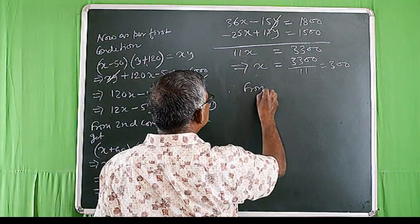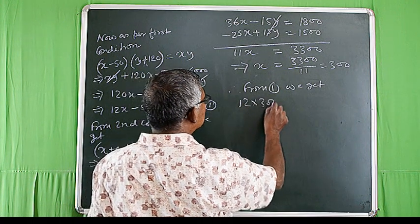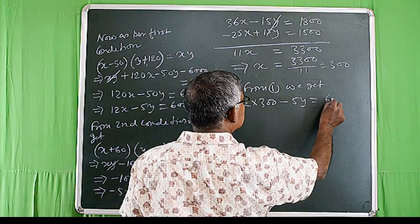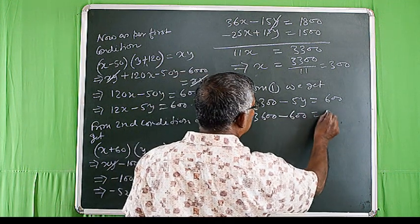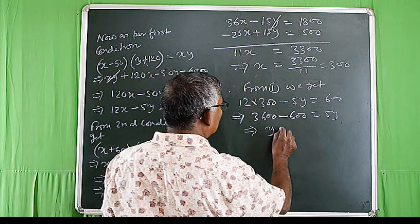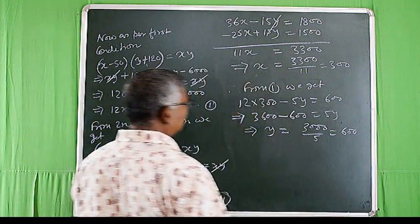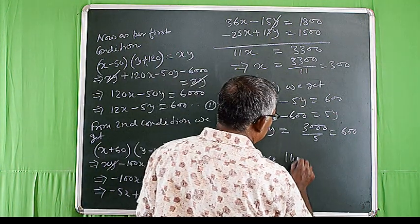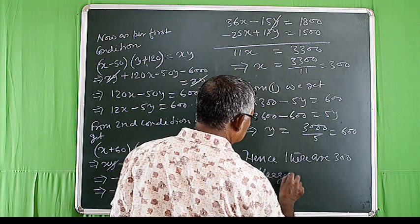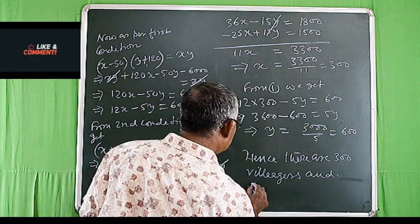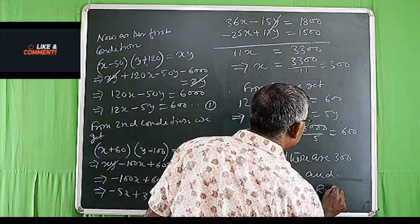Now let us substitute the value of x in equation number 1. From equation 1: 12 × 300 - 5y = 600, which implies 3600 - 600 = 5y, so y = 3000 / 5 = 600. Hence there are 300 villagers and everyone gets Rs. 600.